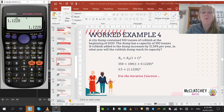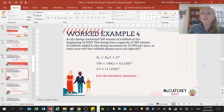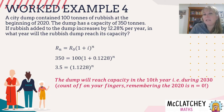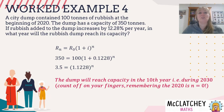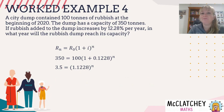Using the iterative method on a calculator: enter 1.1228, press equals (n = 1), then multiply by 1.1228 repeatedly and press equals each time to raise to successive powers. Continuing through powers 3, 4, 5, 6, 7, 8, 9, 10 — nearly there — and at power 11 we've just gone past 3.5. So between n = 10 and n = 11 the dump reaches capacity. It's good to show working every few steps. The dump reaches capacity during 2030: counting from n = 0 at 2020, n = 10 is 2030.